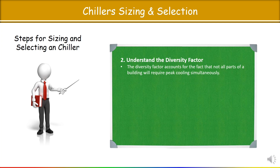The diversity factor accounts for the fact that not all parts of a building will require peak cooling simultaneously. If you have a high-rise building with different AHU/FCU units, we know that all of these AHU/FCU units are not 100% in working condition simultaneously. That is why diversity factor is very important — to save cost on equipment and energy consumption.